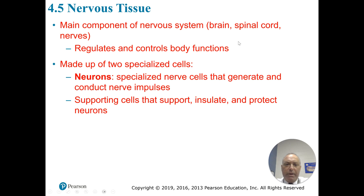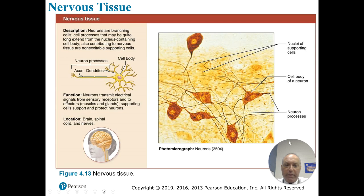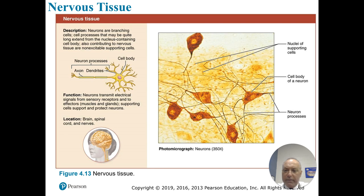Nervous tissue, made up of the brain, spinal cord, and nerves, regulates and controls body function. Neurons are specialized cells that generate action potentials. The neuron shown looks like a pyramidal cell with dendrites and processes that connect to other neurons to modulate their signals. Neurons have an axon, a dendrite, a cell body, and a neural process.